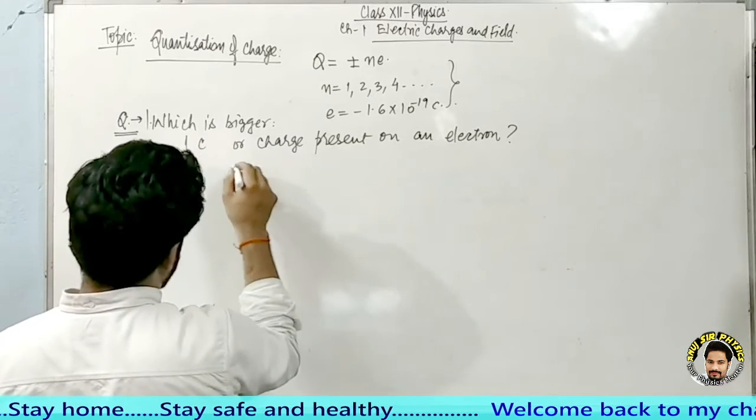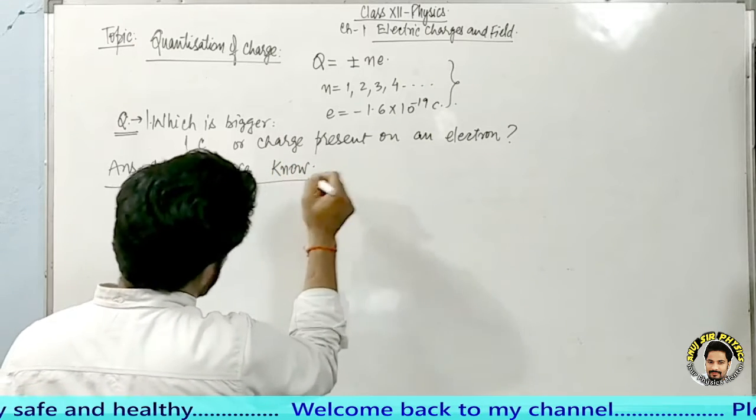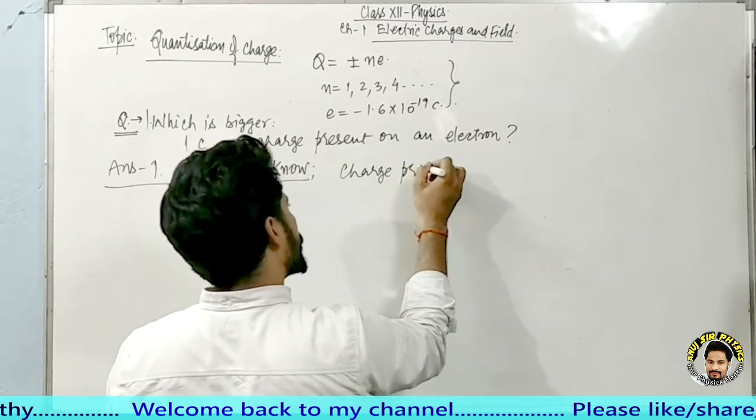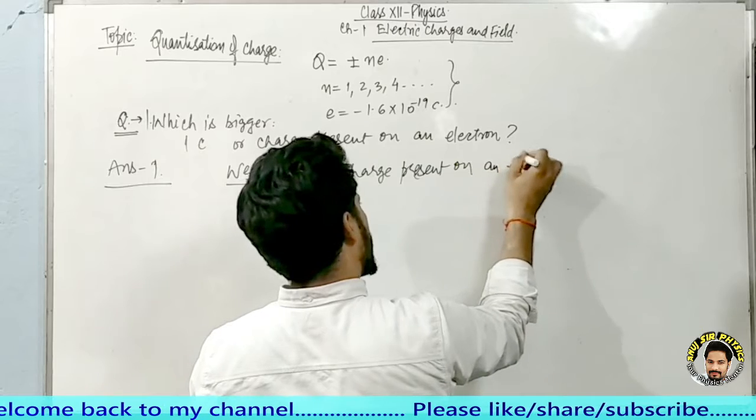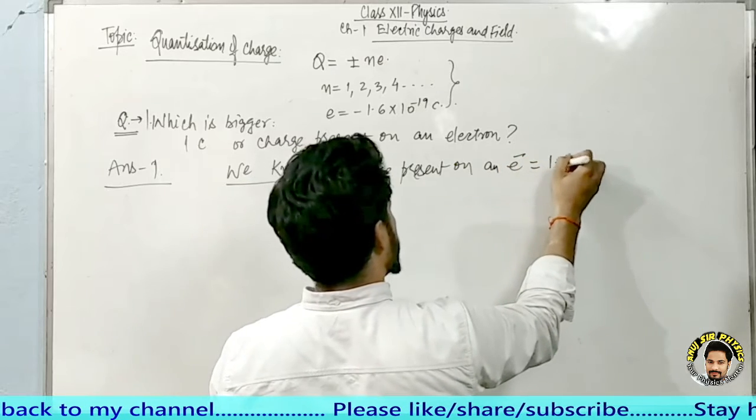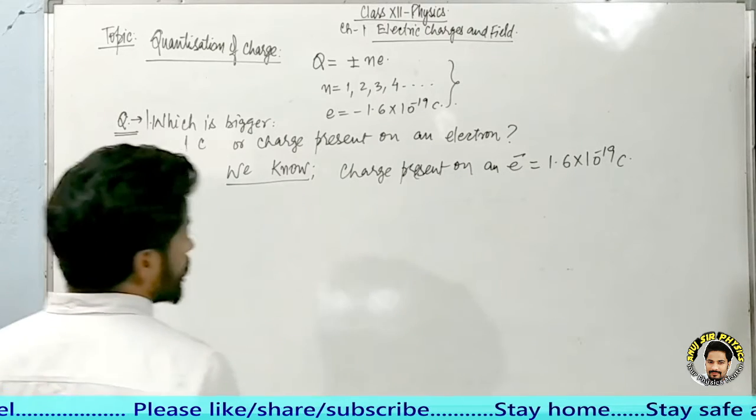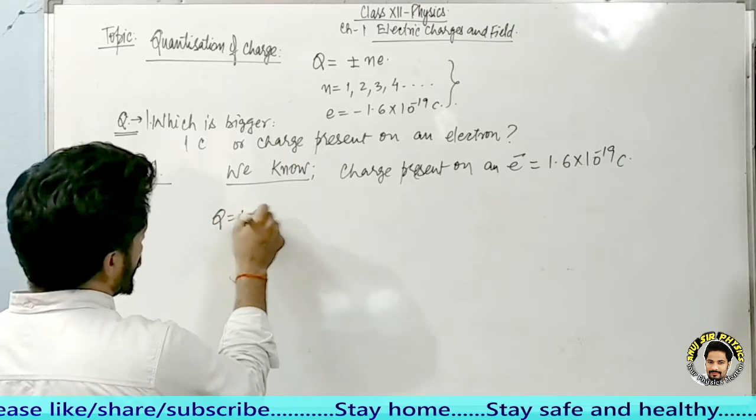We will write: We know charge present on an electron is 1.6 into 10 to the power of minus 19 coulombs. Now here your 1 coulomb charge is given. The condition is Q = 1 coulomb. We have learned Q = ne.